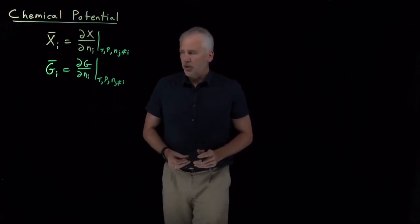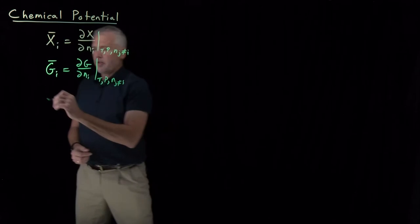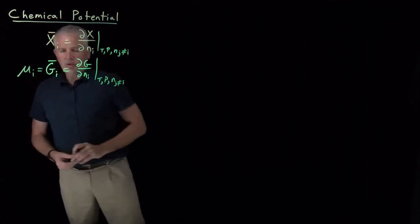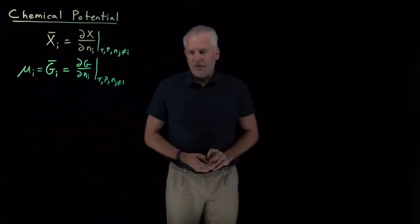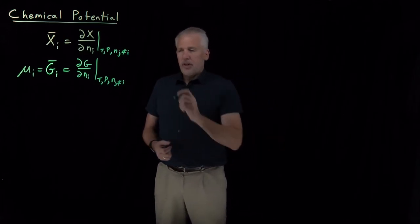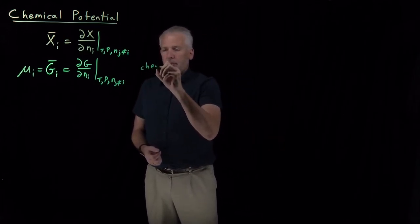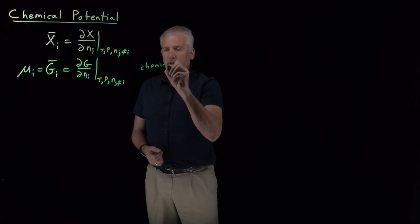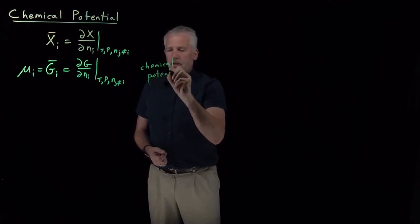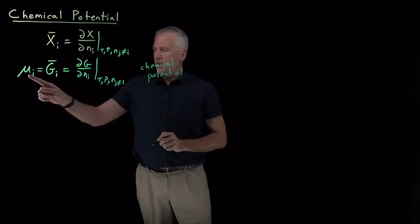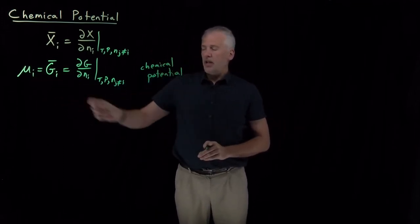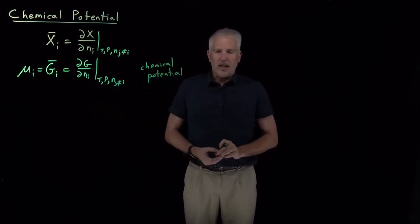The partial molar Gibbs free energy is important enough that we give it another name. Instead of calling it the partial molar Gibbs free energy, we call it the chemical potential and give it a different symbol: mu sub i is the partial molar Gibbs free energy of component i in a solution.